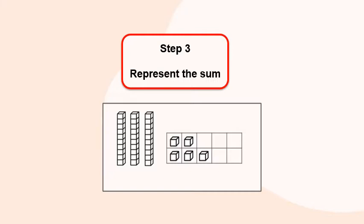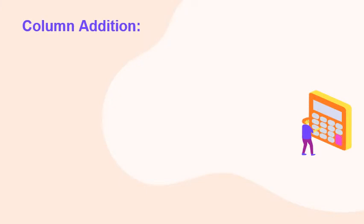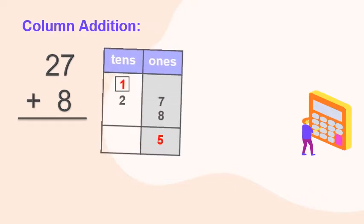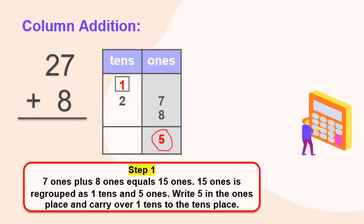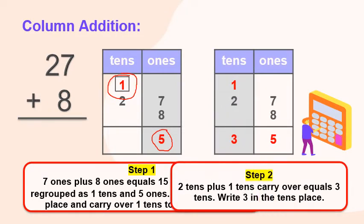Now let's answer this using column addition. Twenty-seven plus eight. Step one: seven ones plus eight ones equals fifteen ones. Fifteen ones is regrouped as one ten and five ones. Write five in the ones place and carry over one ten to the tens place. Step two: add the tens place — two tens plus the one ten that was carried over equals three tens. Write three in the tens place. Therefore, twenty-seven plus eight equals thirty-five.